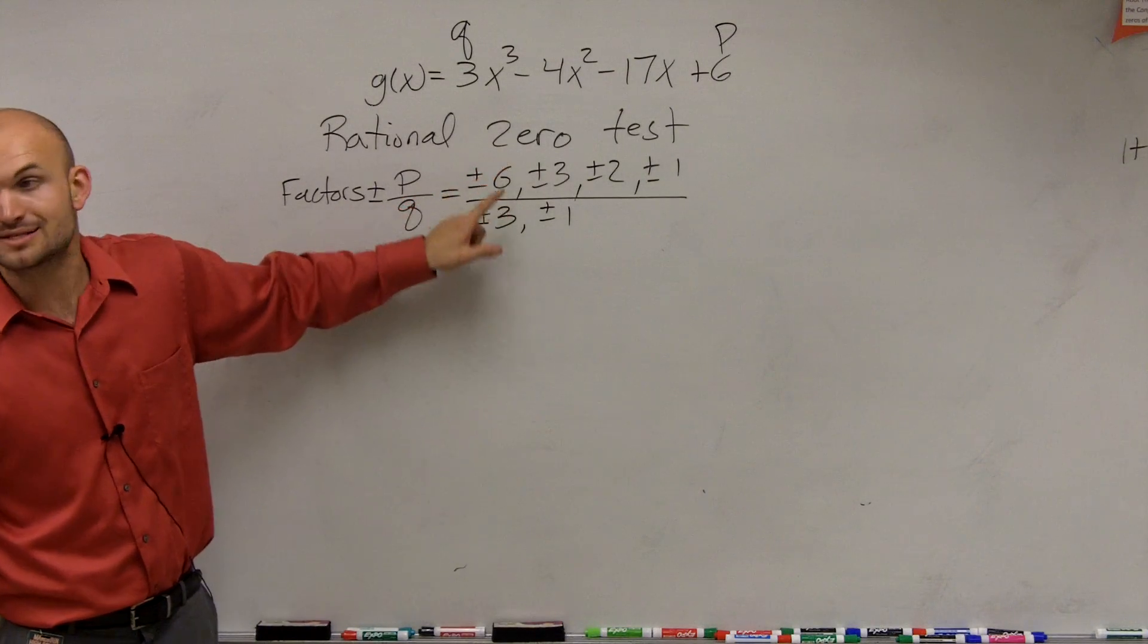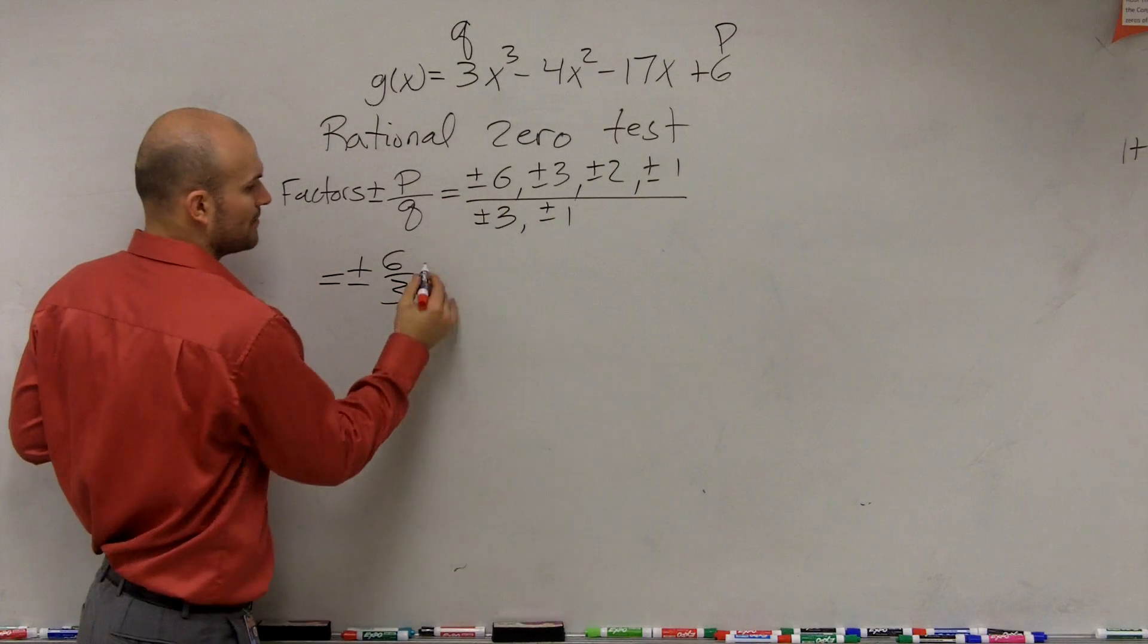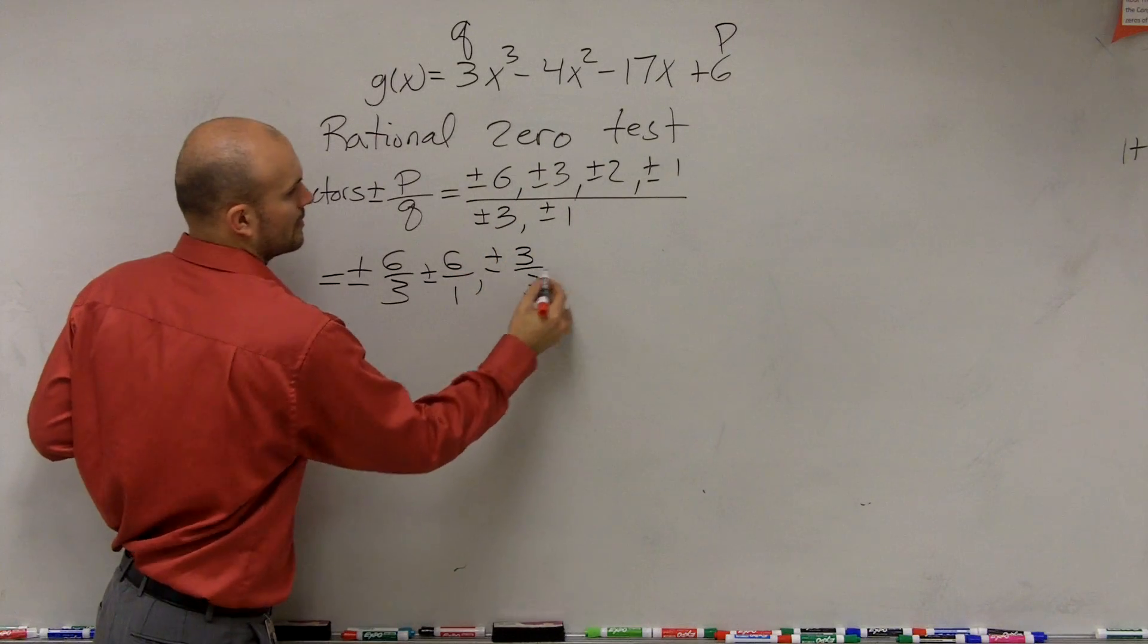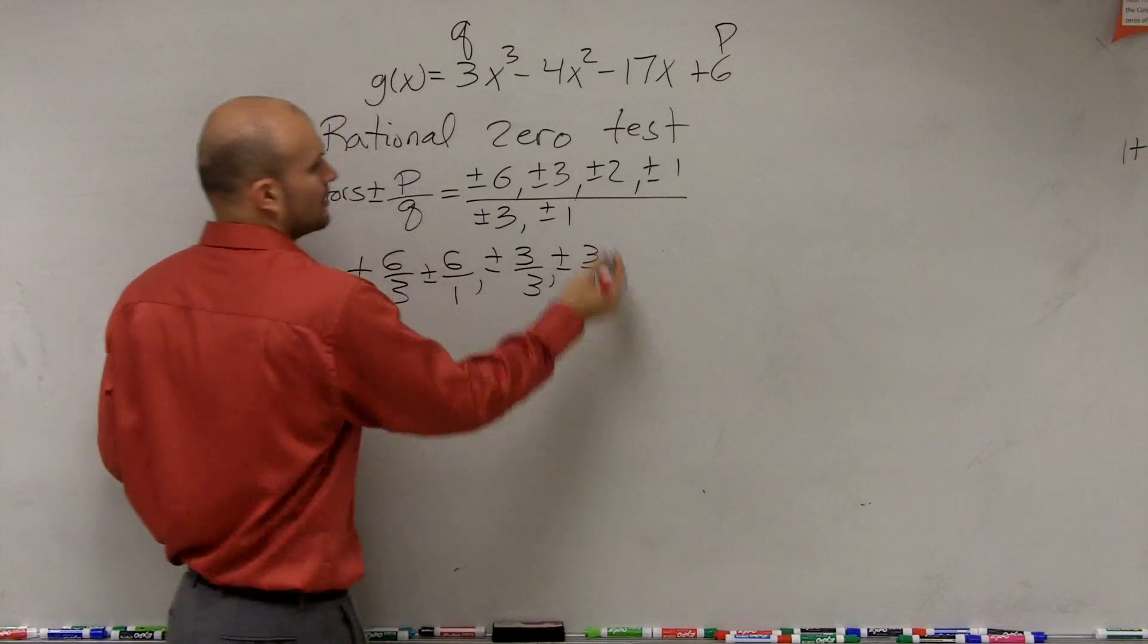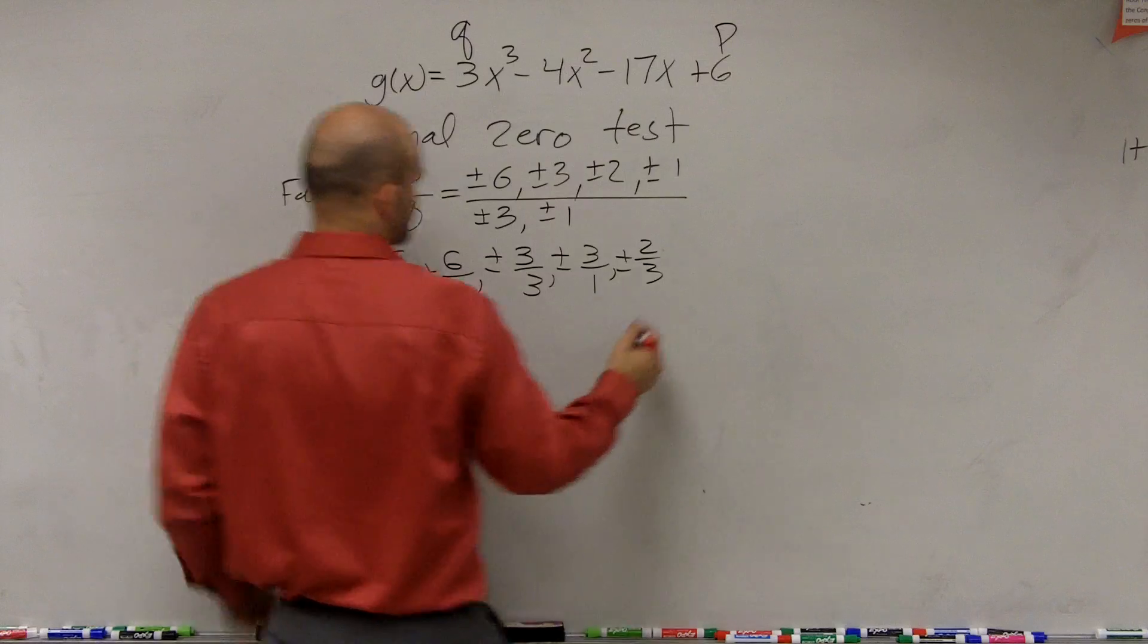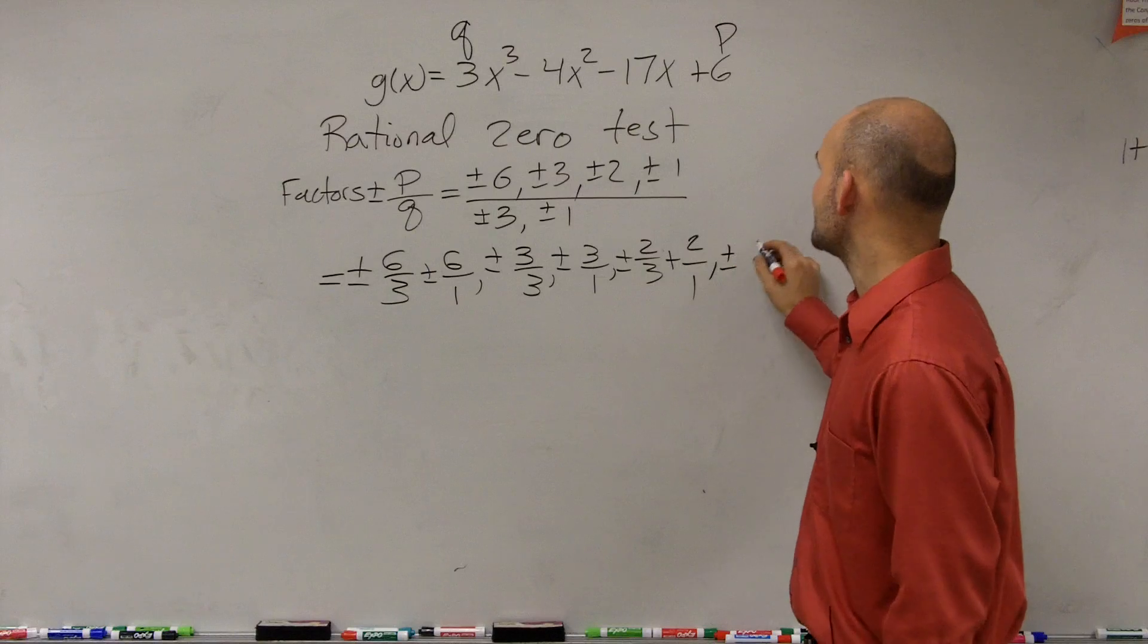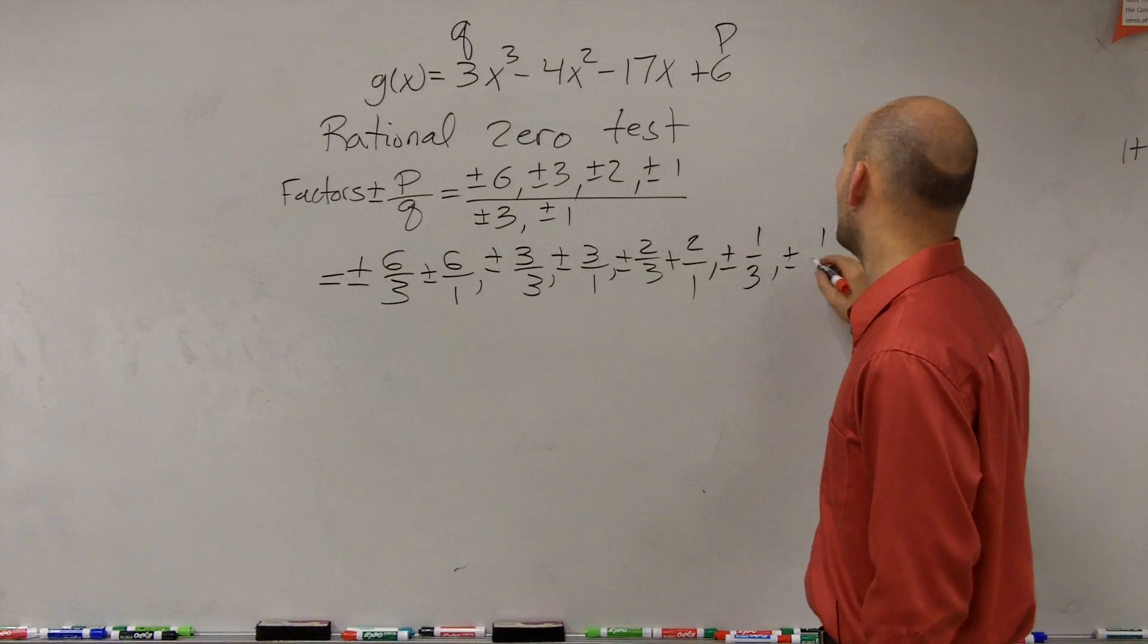Plus or minus p over q. So you could do plus or minus 6 over 3, right? Plus or minus 6 over 1. It could be plus or minus 3 over 3, plus or minus 3 over 1, plus or minus 2 over 3, plus or minus 2 over 1, plus or minus 1 over 3, plus or minus 1 over 1.